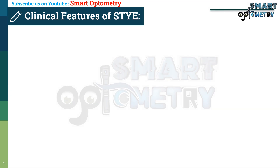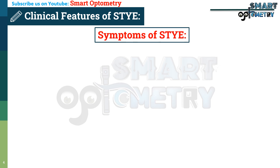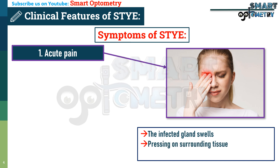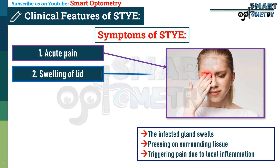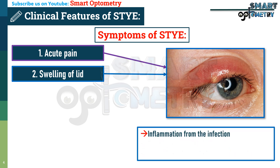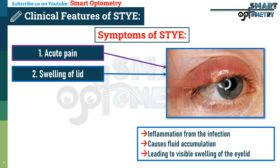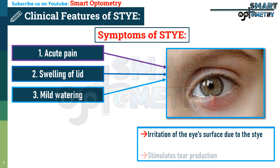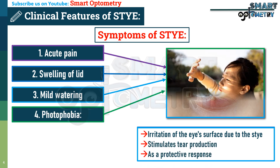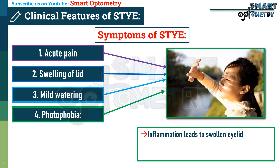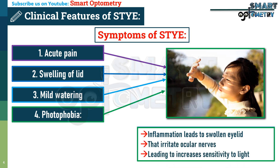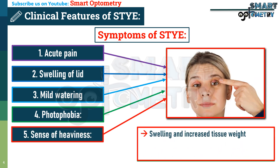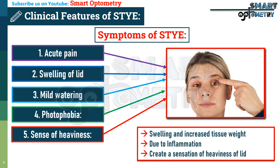The clinical features of external hordeolum include the following symptoms. First, acute pain — the infected gland swells, pressing on surrounding tissue and triggering pain due to local inflammation. Second, swelling of the lid — inflammation from infection causes fluid accumulation, leading to visible swelling. Third, mild watering — irritation of the eye's surface stimulates tear production as a protective response. Fourth, photophobia — inflammation irritates ocular nerves, leading to increased sensitivity to light. Fifth, a sense of heaviness — swelling and increased tissue weight create a sensation of heaviness in the affected lid.